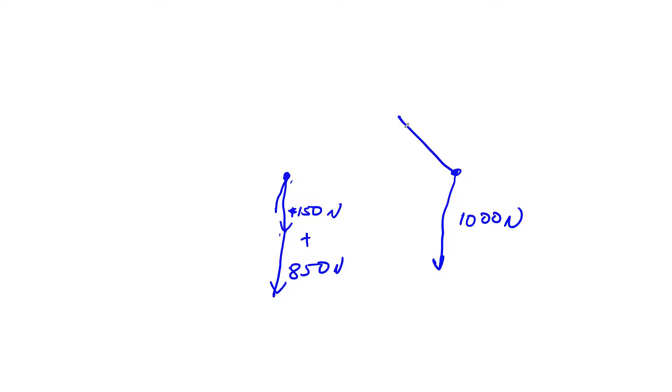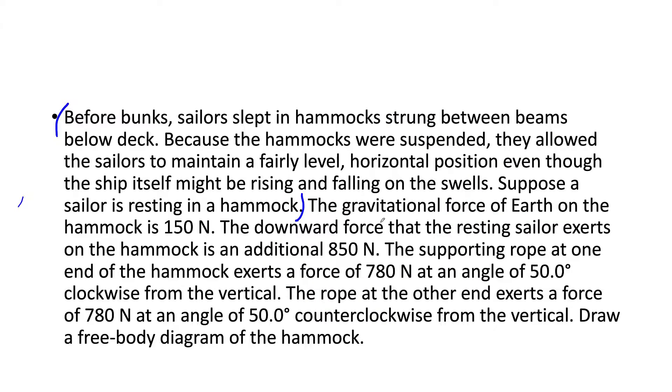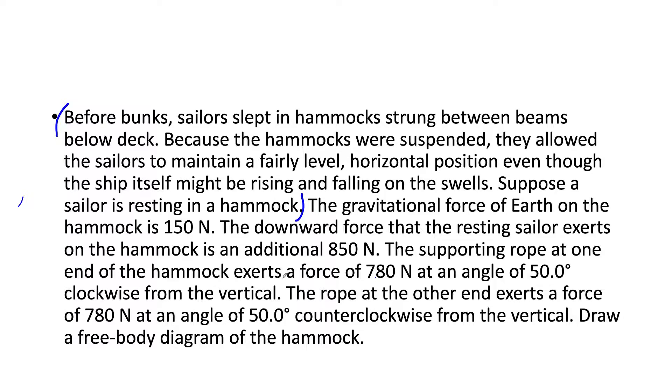And we're going to have two arrows going either side. And these are the ropes that are supporting the hammock. And so one's 780, both of them are 780 newtons. So this is going to be 780 newtons going one way and 780 going the other. Now I'm going to draw a dotted line.